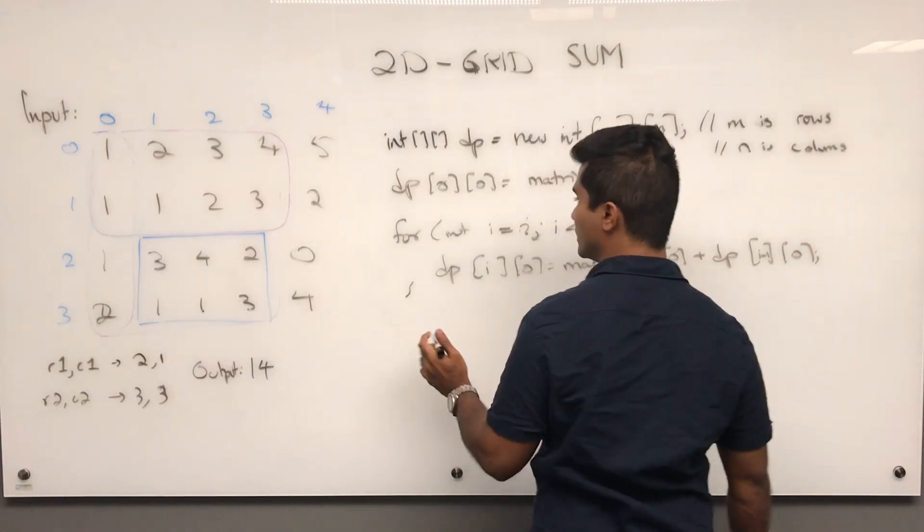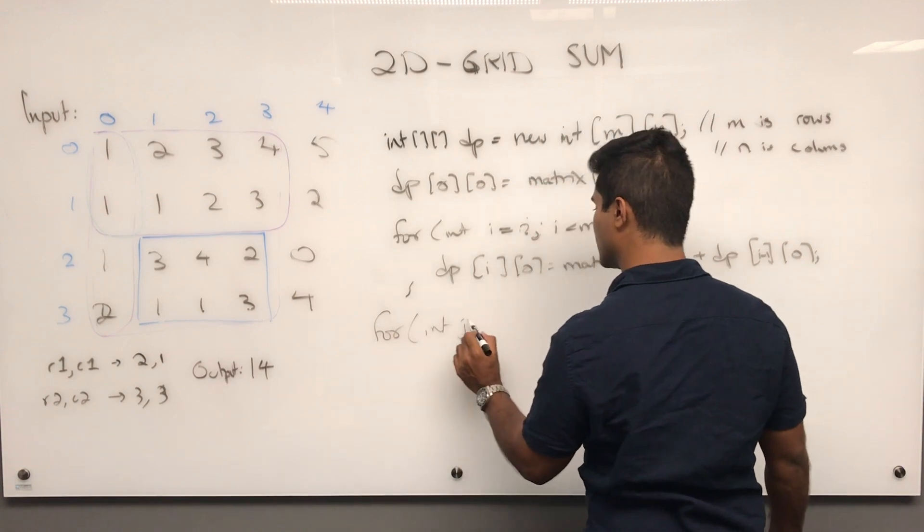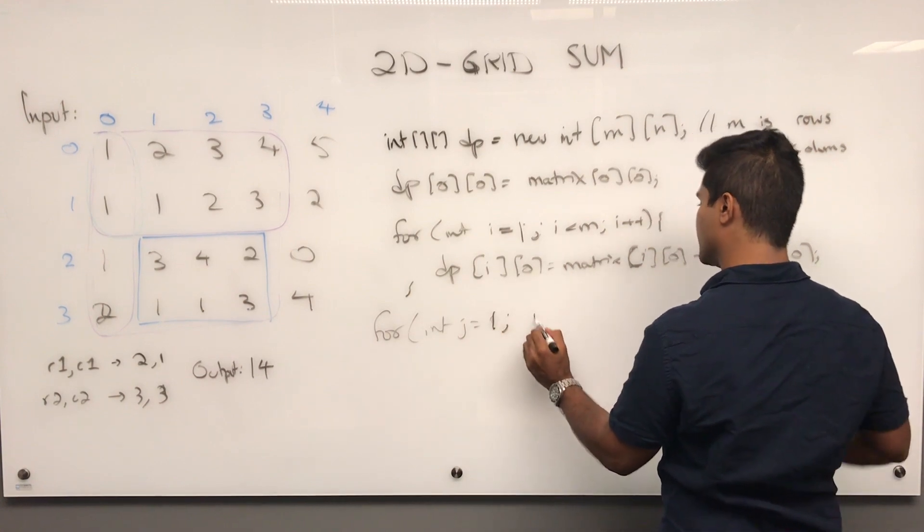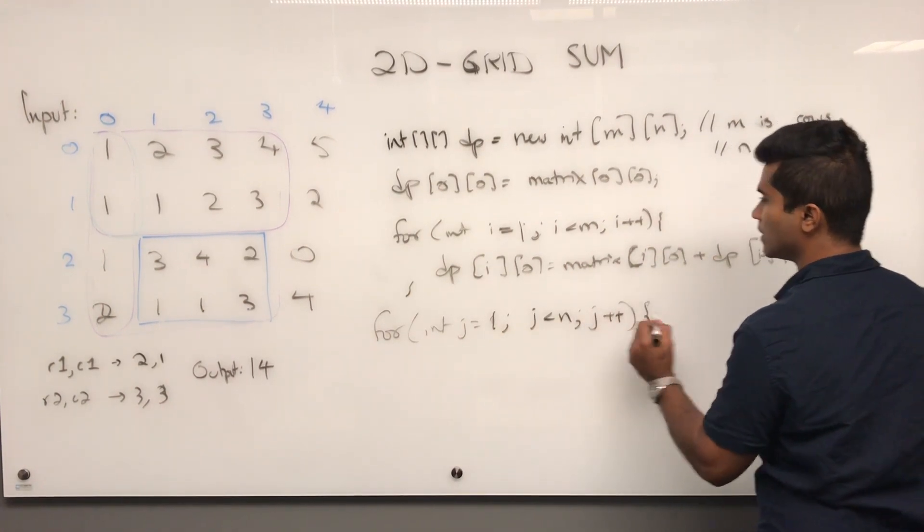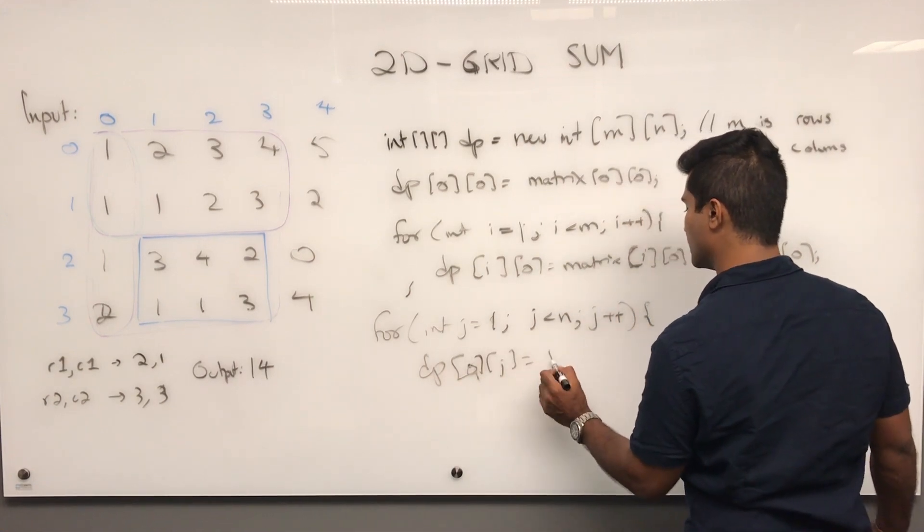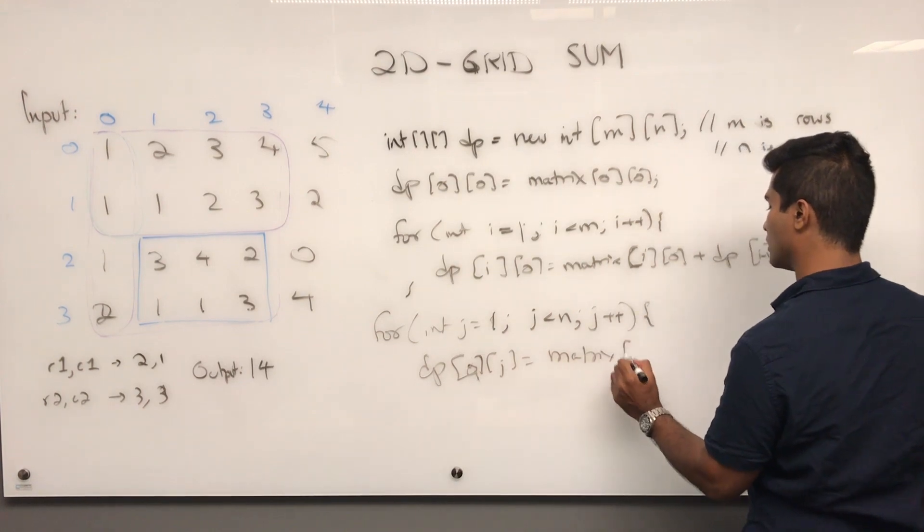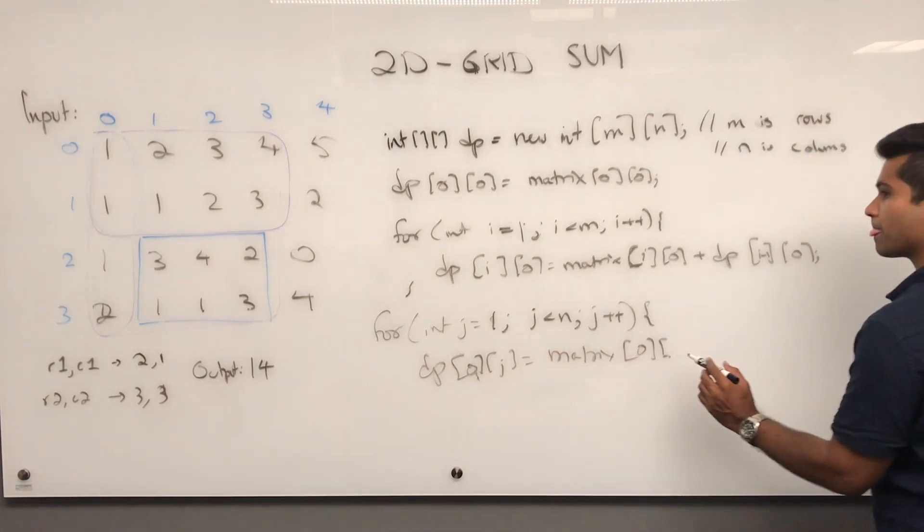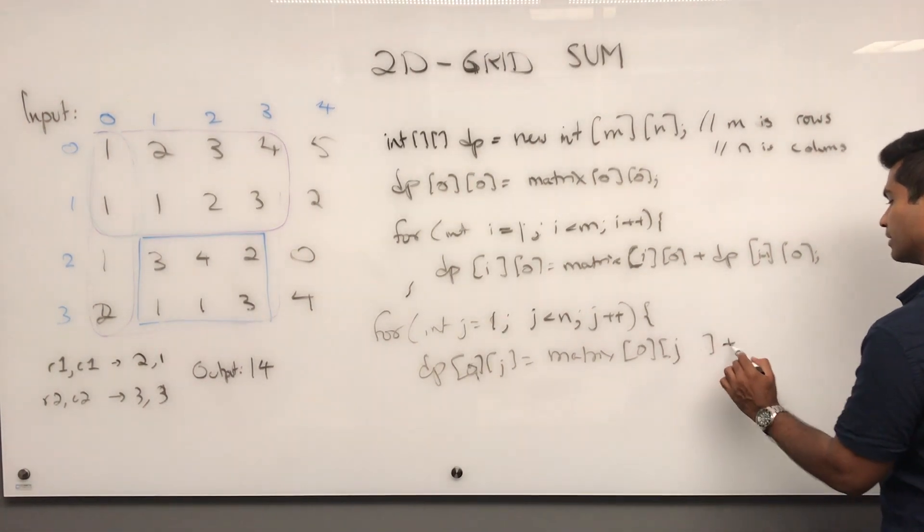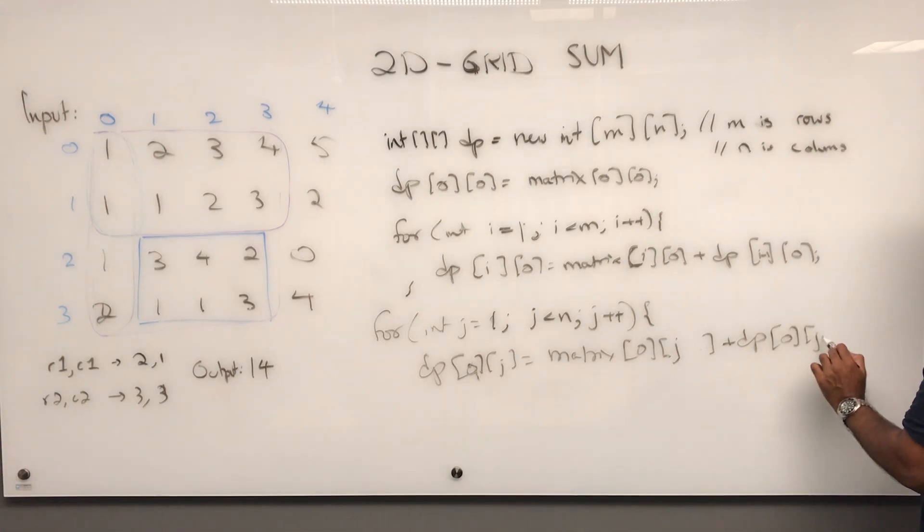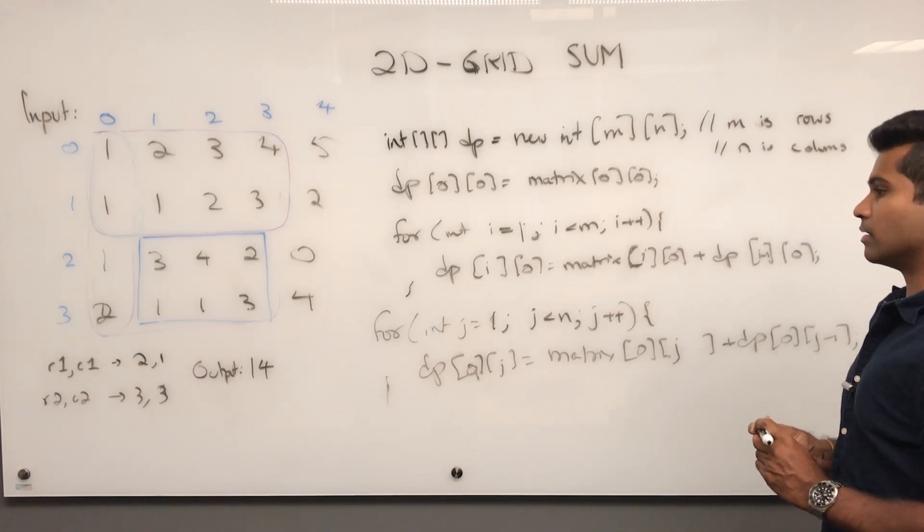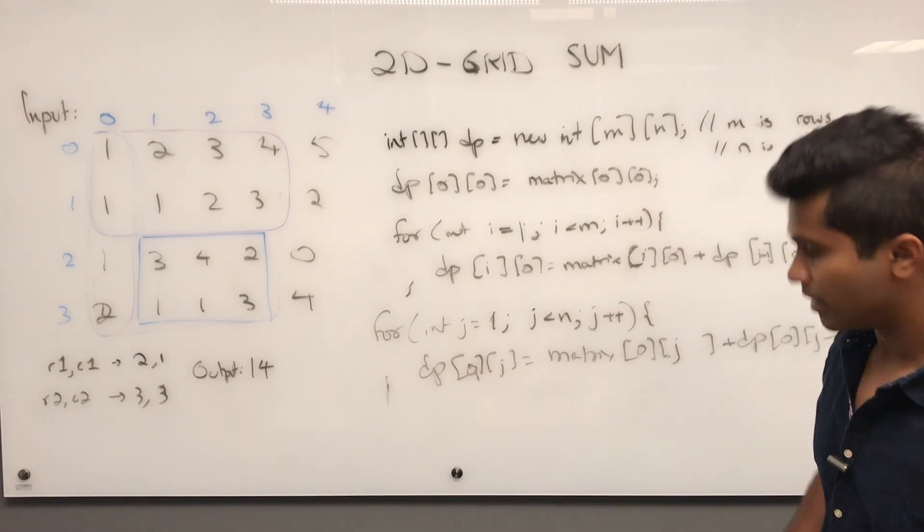And now we need to fill this DP part. So for int J is equal to 1, J is less than N, J plus plus. DP of 0.